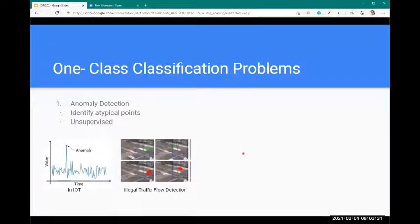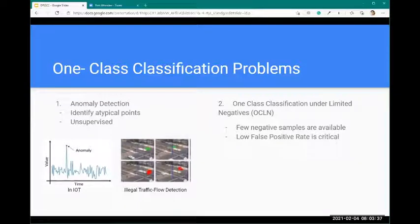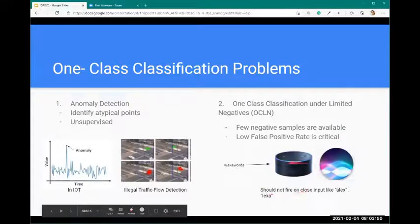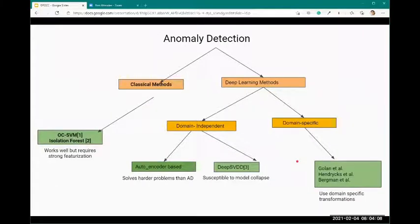Another problem is one-class classification under limited negatives. In the training data, there are very few negatives. Our goal is to learn a classifier which does not misfire even for inputs very close to the wake word. For example, with Alexa, the model should not activate when we say Alex or similar words.